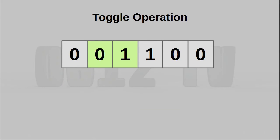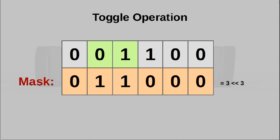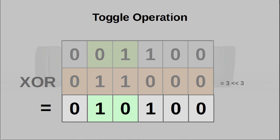You can also toggle bits by creating a mask with one at all the bits you want to toggle, and performing an XOR operation between the original number and the mask.